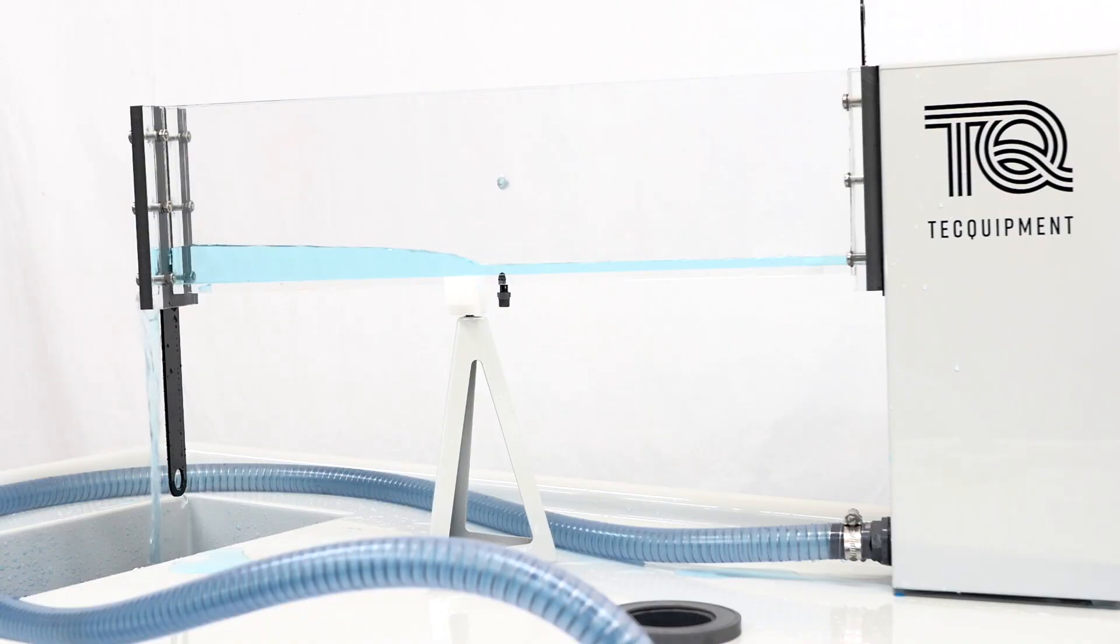As you can see, the water is shallow and rapid before the jump and deeper and slower after it. The jump itself is turbulent, representing a high energy loss.